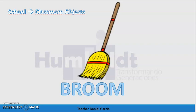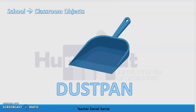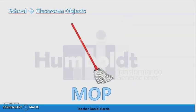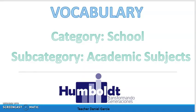We continue with broom. The spelling of this word is b-r-o-o-m, broom. After this we have dustpan — recogedor. The spelling of this word is d-u-s-t-p-a-n, dustpan. We continue with mop — trapero or mopa in some countries. The spelling of this word is m-o-p.